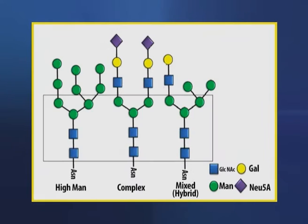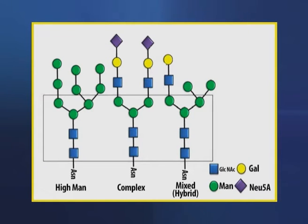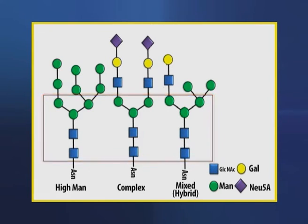All N-linked oligosaccharides have in common a pentasaccharide core consisting of three mannose and two N-acetyl glucosamine residues. Additional sugars are attached to this core to form the great variety of oligosaccharide patterns found in glycoproteins.